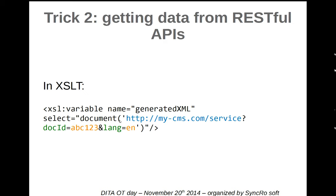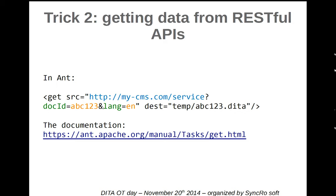In XSLT, you would create a variable — for example called generatedXML — that contains the XML generated by the database or CMS. You call it using the document() function, passing the URL of the web service with its parameters as the argument. This URL would not be hardcoded; the parameter values would most probably be dynamic and come from the content you are processing. In ANT, it would be quite similar, but you would use the get task and store the result in a temporary file, and there is documentation available for this.